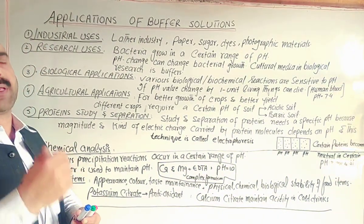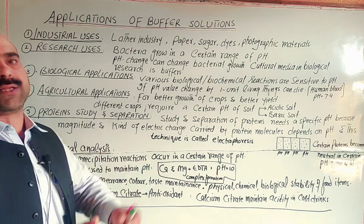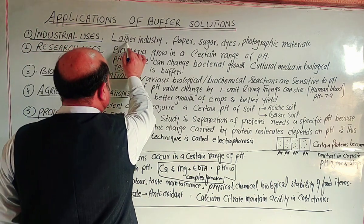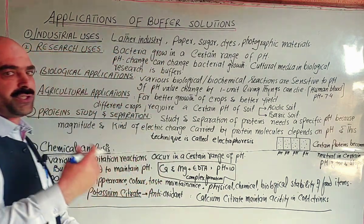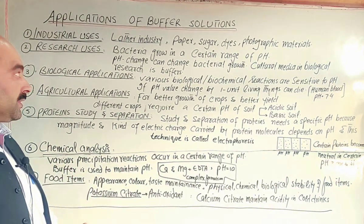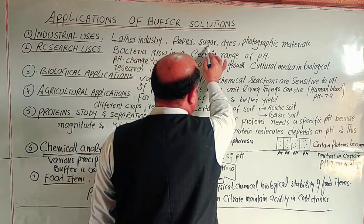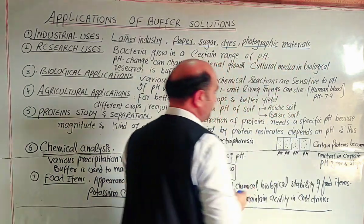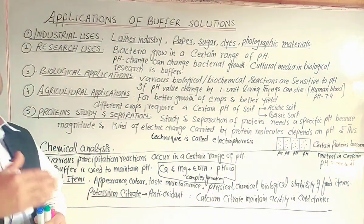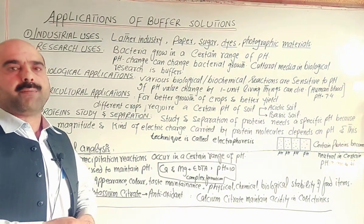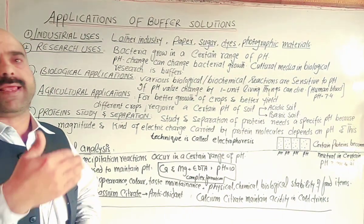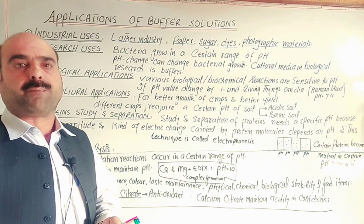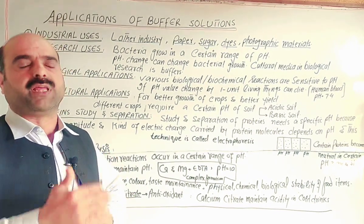Buffer solutions provide a specific pH and resist change in pH. Industries such as the leather industry, dye industry — where hides are processed into leather — the purification process, the paper industry, the sugar industry, the dyes industry, and the photographic material industry all use buffer solutions. Without a buffer solution, if the solution becomes slightly acidic or slightly basic, the finishing result will not be accurate and the product quality will suffer.